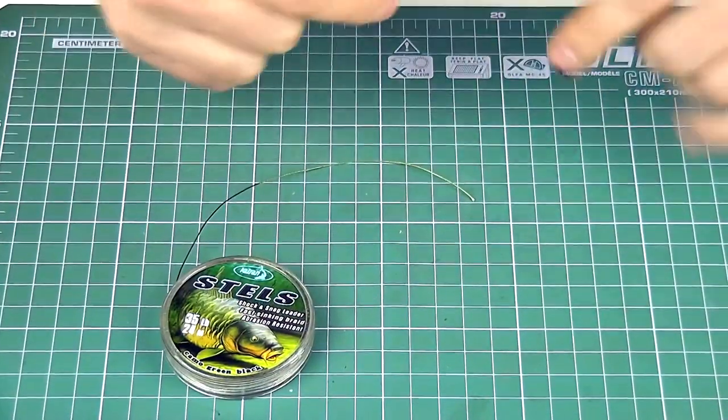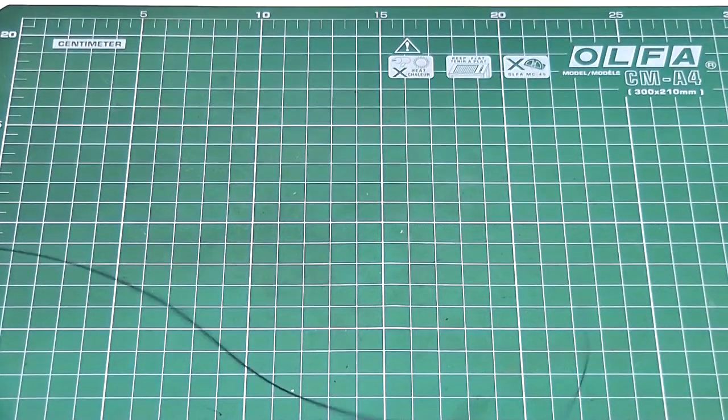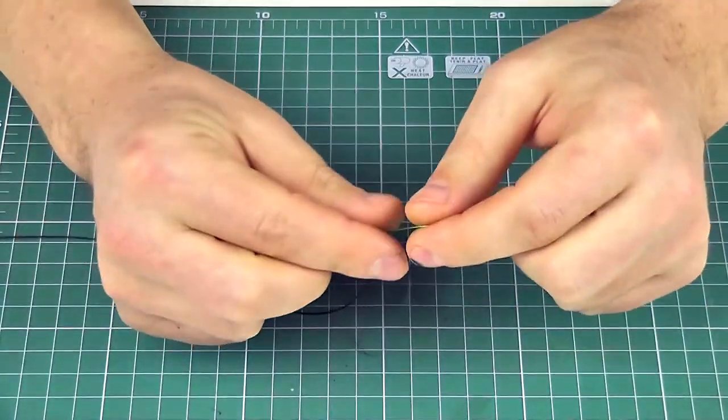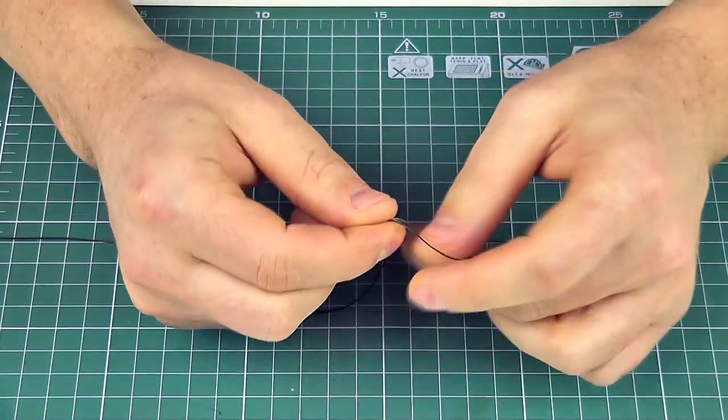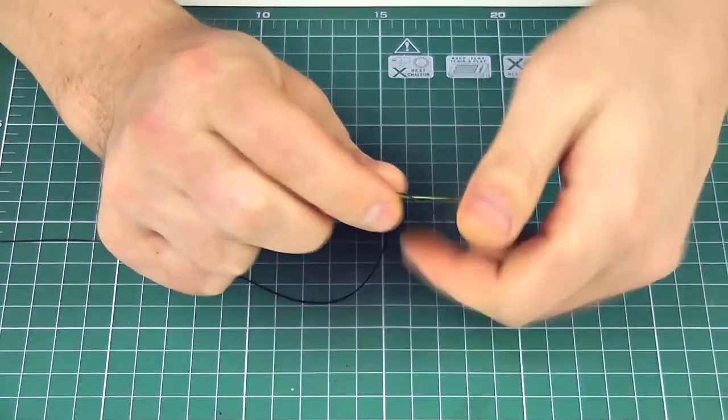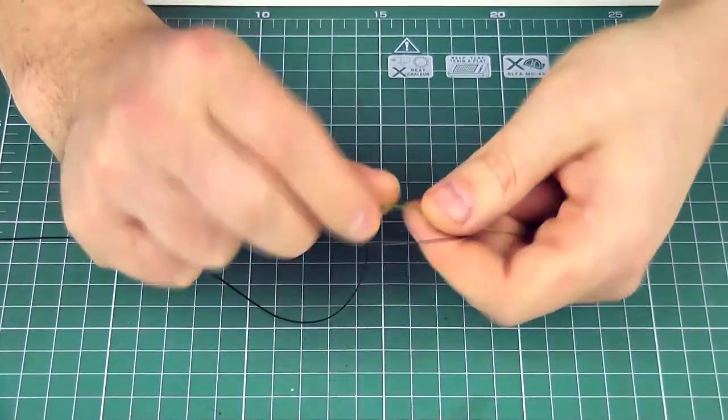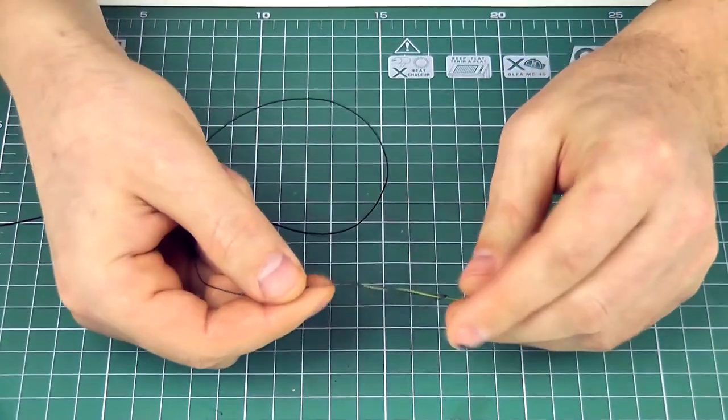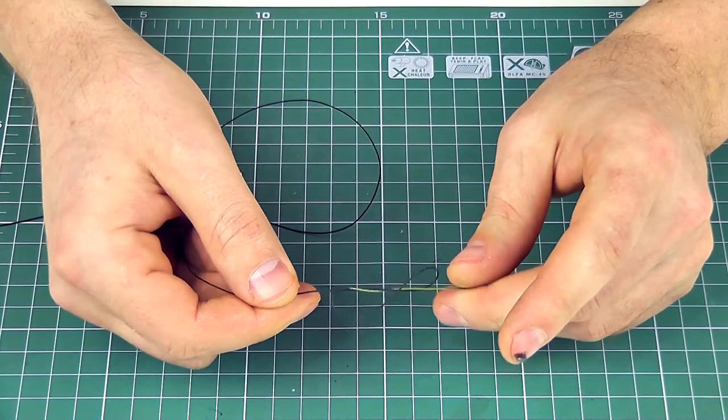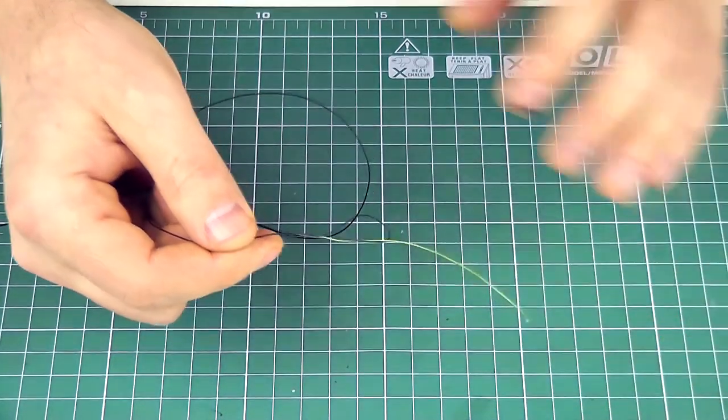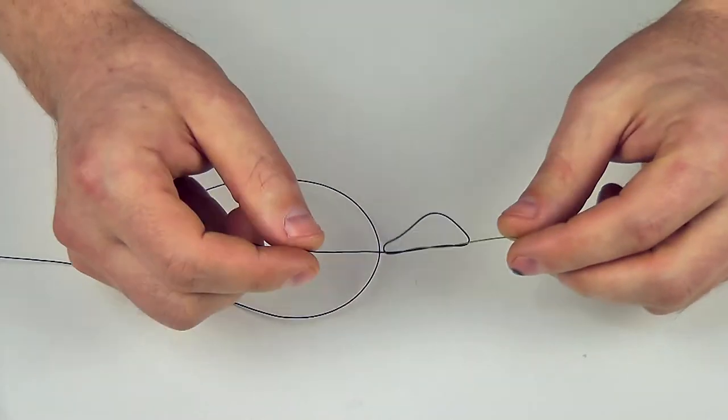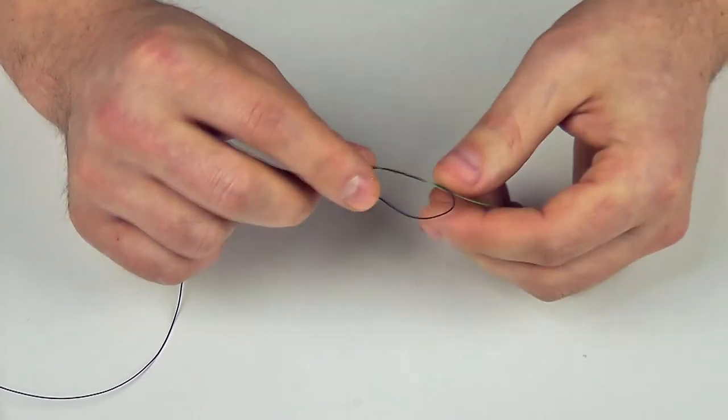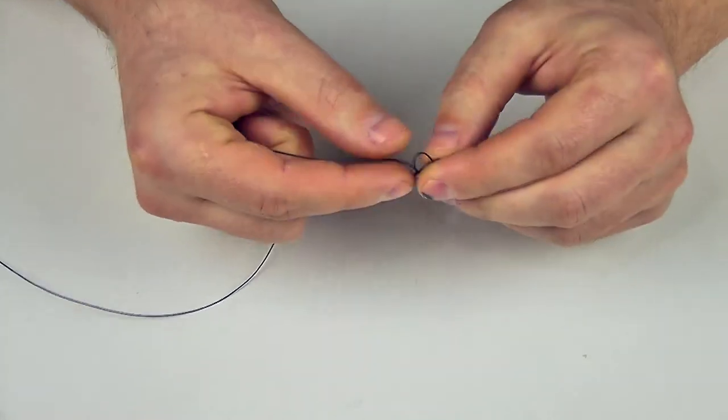To do it, we need to wind the shock leader into an 8-shaped loop. I'm sure everybody knows how to loop it. As you see, I've got this kind of cute 8-shaped loop. Here it is, 8-shaped. And I fold it to form two neighboring loops.